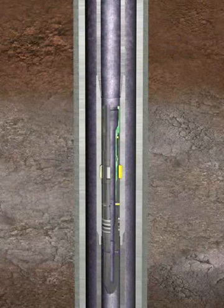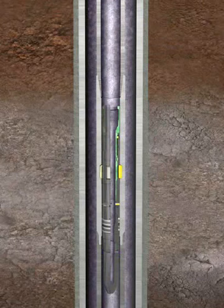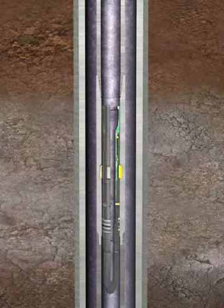Once the well has equalized, a second trip is made with a standard GS pulling tool, which latches in the lock mandrel's internal fishing neck.